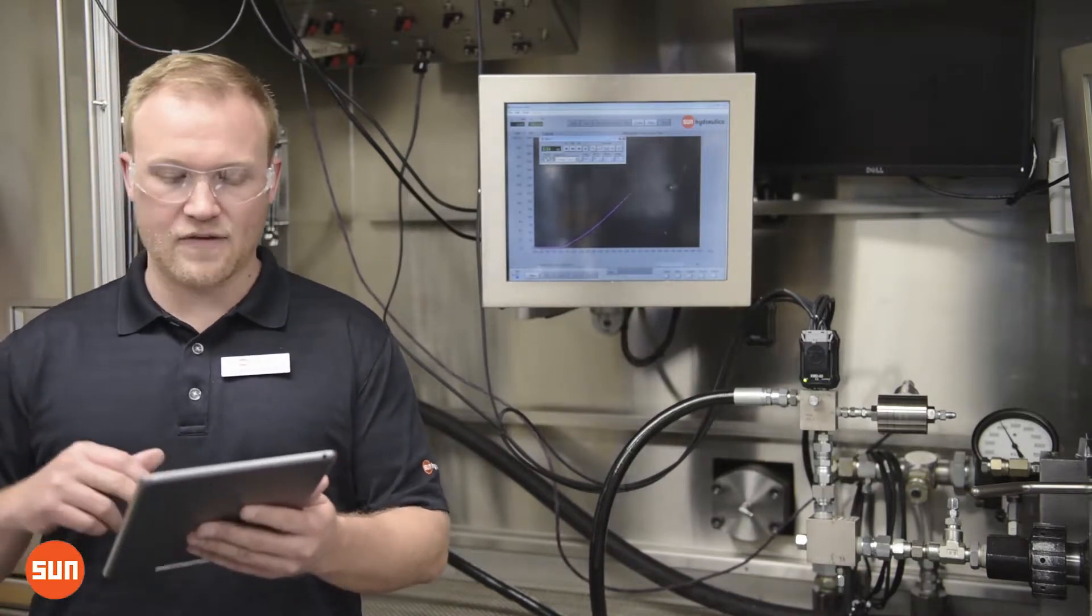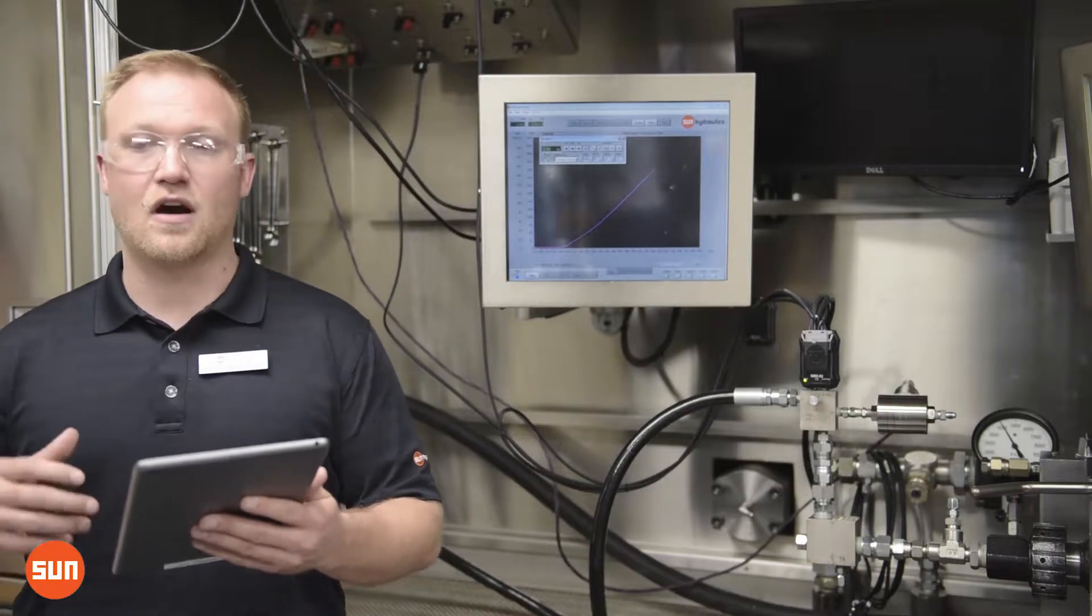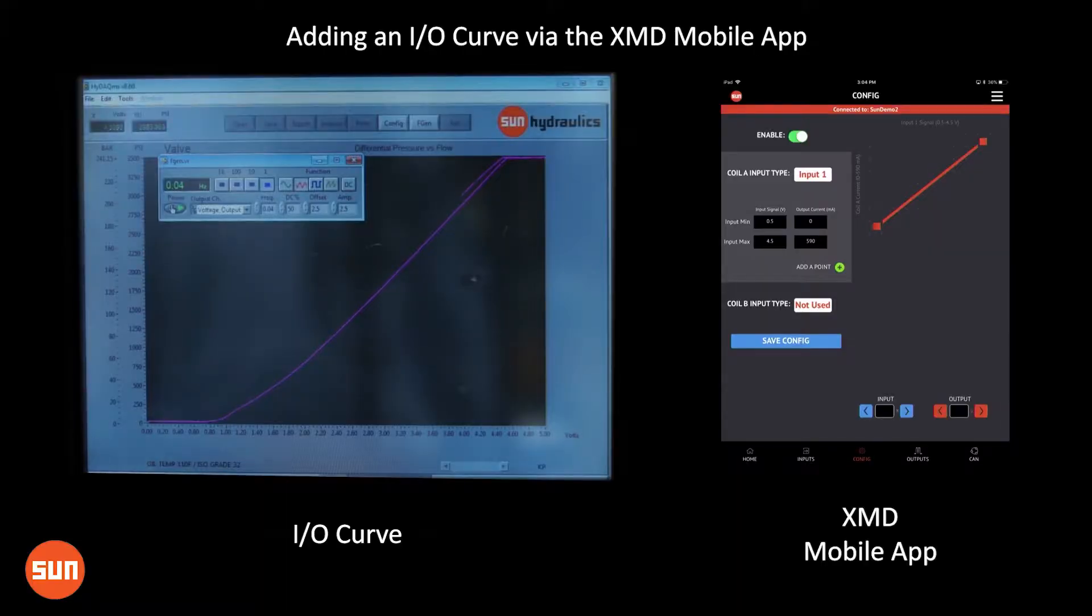Now in this setting, we're going to have a simple configuration of a 0-5 volt input commanding a 0-590 milliamp curve. That's going to give us more of a linear output or single output, single slope curve.